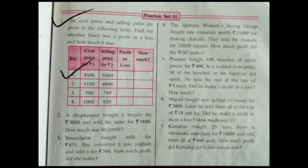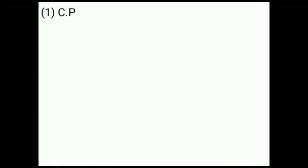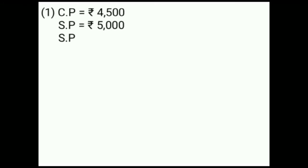Cost price is given Rs. 4,500. Selling price is given Rs. 5,000. When solving the sums, you have to write again: cost price is equal to Rs. 4,500, selling price is equal to Rs. 5,000. Selling price is greater than cost price, so you have to find profit. Profit is equal to selling price minus cost price.